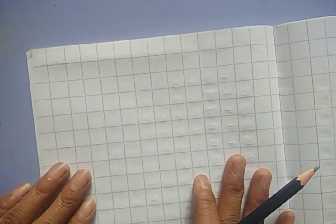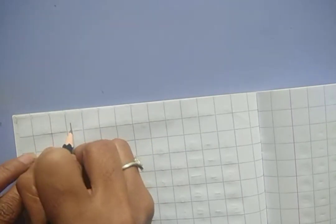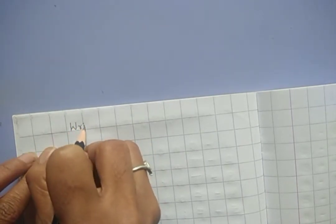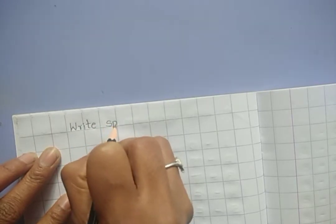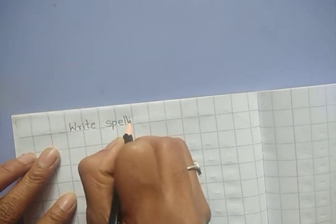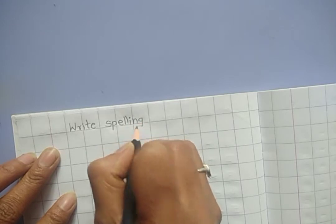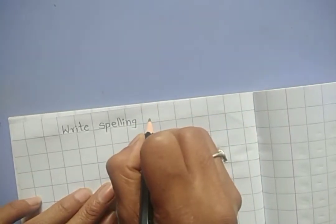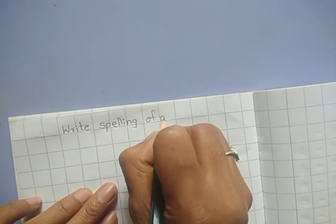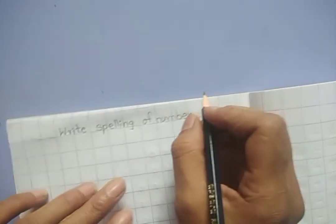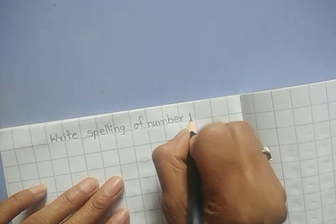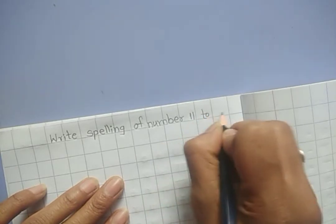Now we will write the spellings of 11 to 20. W-R-I-T-E write, S-P-E-L-L-I-N-G spelling of N-U-M-B-E-R number 11 to 20.